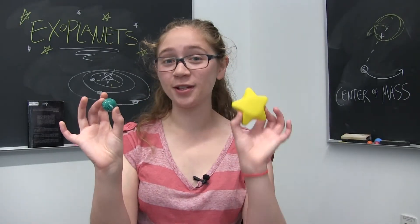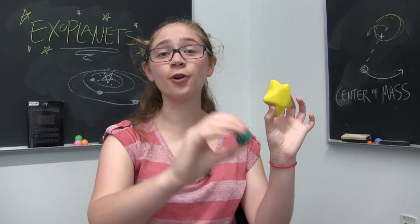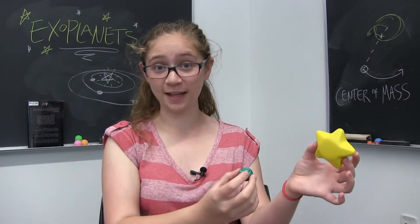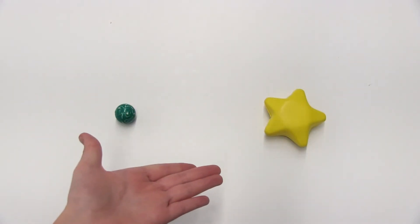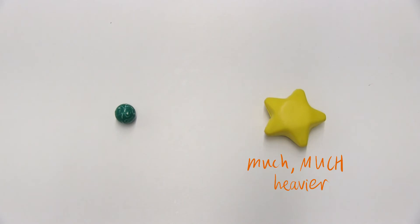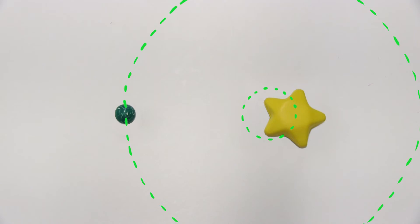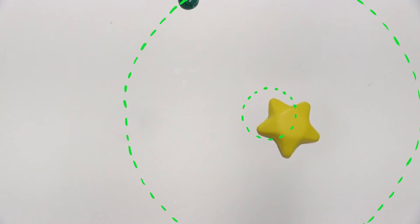Now consider a planet going around its star as a single system. The system is rotating in free space with no external forces, so it must be rotating about its center of mass. And where is the center of mass for the star-planet system? Well, the star is much heavier than the planet, so the center of mass will be much closer to the center of the star than the center of the planet. But the planet is there, so the center of mass will be slightly off from the star's center. And that means the star must be making tiny revolutions about some point in space. Just like the star's gravitational tug makes the planet move in circles, the planet's gravitational tug makes the star move in circles too — just much smaller circles.